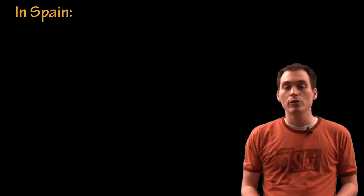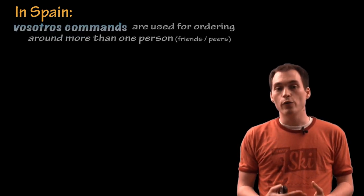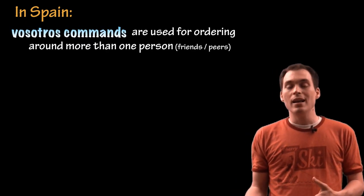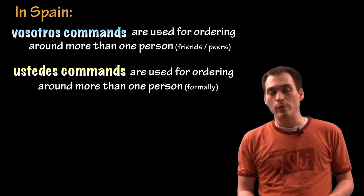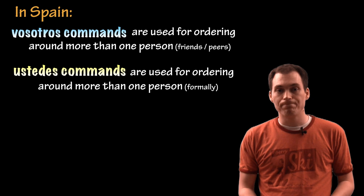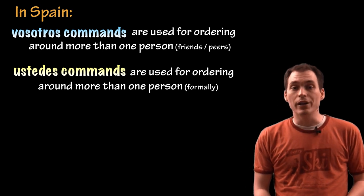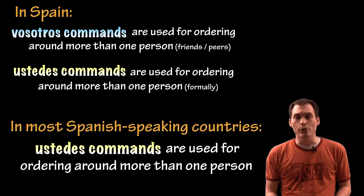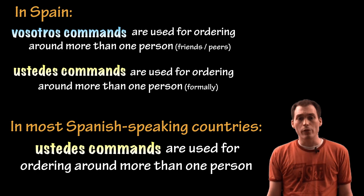So imagine you want to order around multiple people. Of course if you were in Spain you would also need to know two forms. You need to know the vosotros for commanding people informally and the ustedes form for ordering people around more formally. But in Latin America, you just need the ustedes form for ordering around multiple people or multiple things.